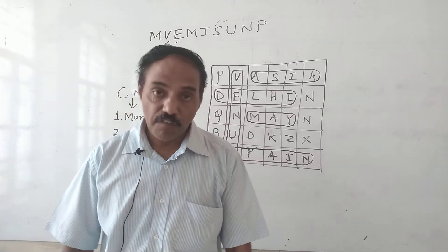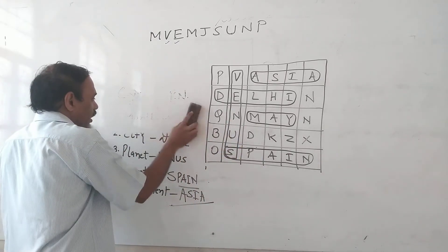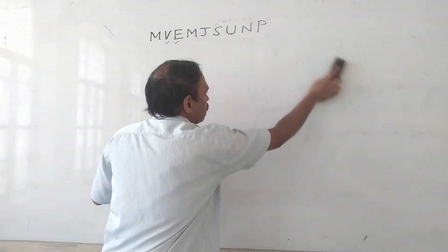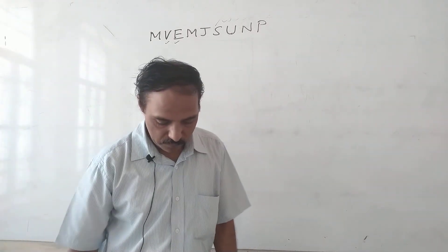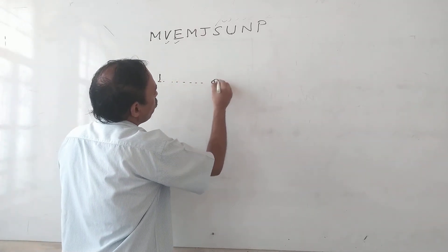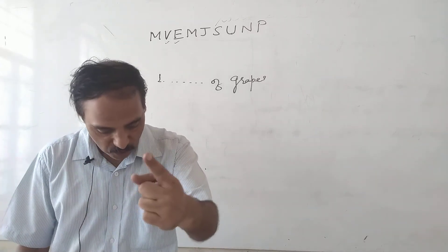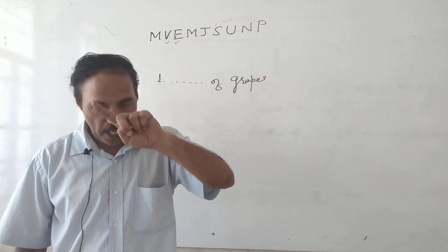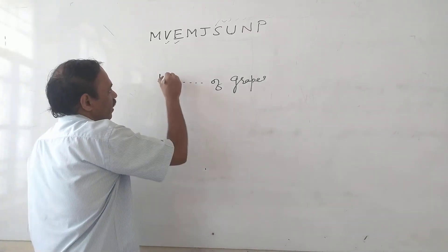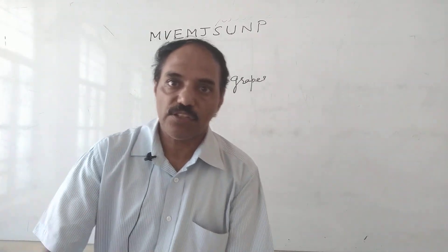Next question - fill in the blanks with the collective noun from the cloud. Fill in the blanks of grapes. Bunch - B-U-N-C-H. Bunch of grapes. So the answer is bunch of grapes.